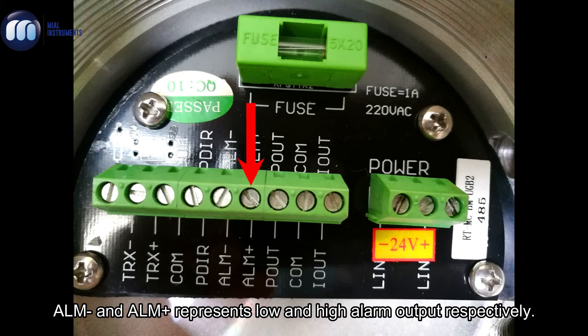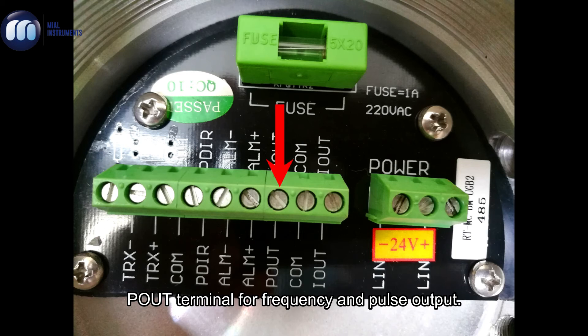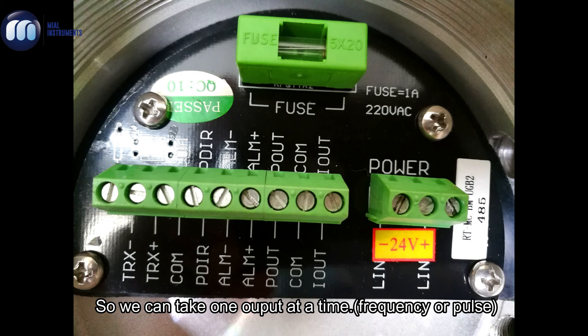ALM minus and ALM plus represent low and high alarm output respectively. P out terminal is for frequency and pulse output. So we can take one output at a time.